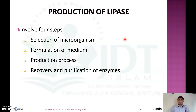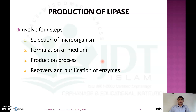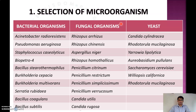Now coming to the production of lipase enzyme, it is usually done by a fermentative process, which involves four steps: first, selection of a suitable microorganism for the lipase; second, formulation of the culture media; third, the production process which includes optimum conditions like temperature, aeration, and pH; and finally, recovery and purification of the enzyme.